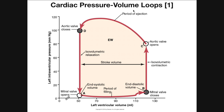Before we get into the details of the cycle, we need to understand a few things. First, which chamber is this referring to? This one is about the left ventricle, as indicated by both the X and Y axes. The horizontal axis is the left ventricular volume in milliliters, increasing to the right. The vertical axis is the left ventricular pressure, increasing going up. The pressure volume loop also has direction — the arrows tell us we're going counterclockwise around this loop.